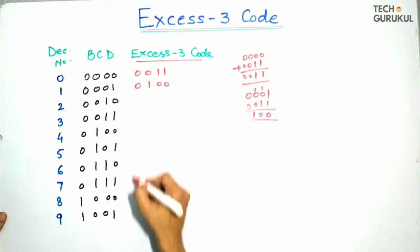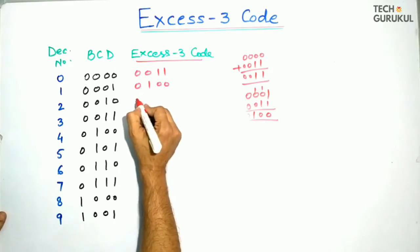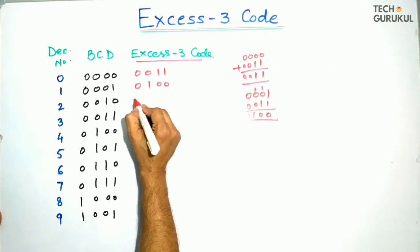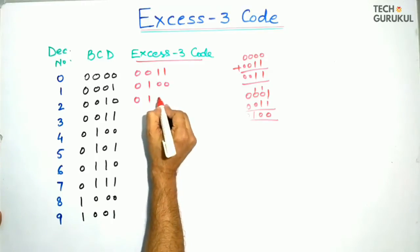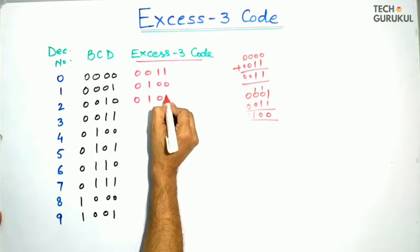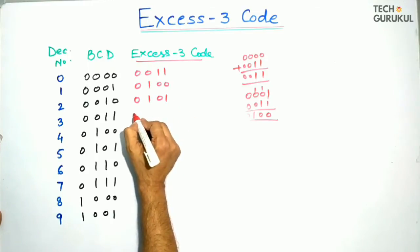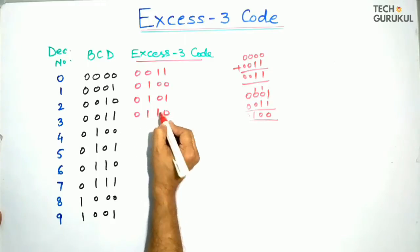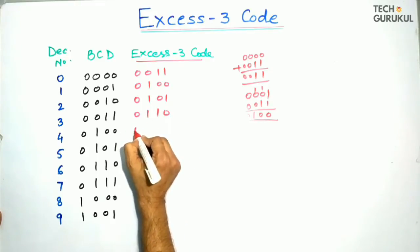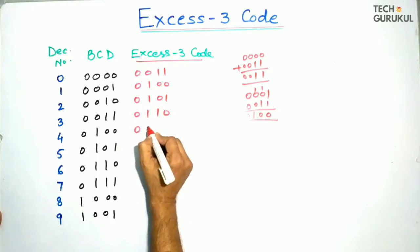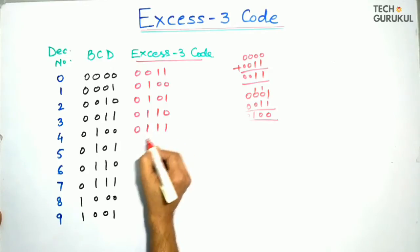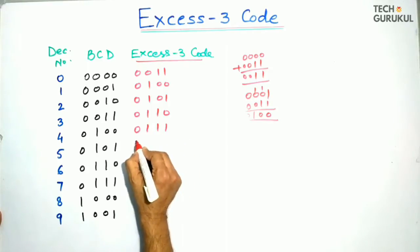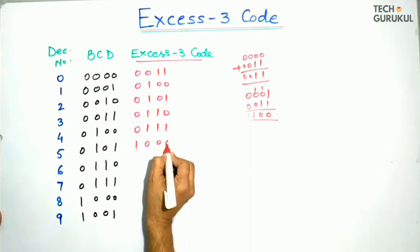We will calculate all the XS3 codes. For 2, the XS3 code is 0101. For 3, it is 0110. For 4, it is 0111. For 5, it is 1000.